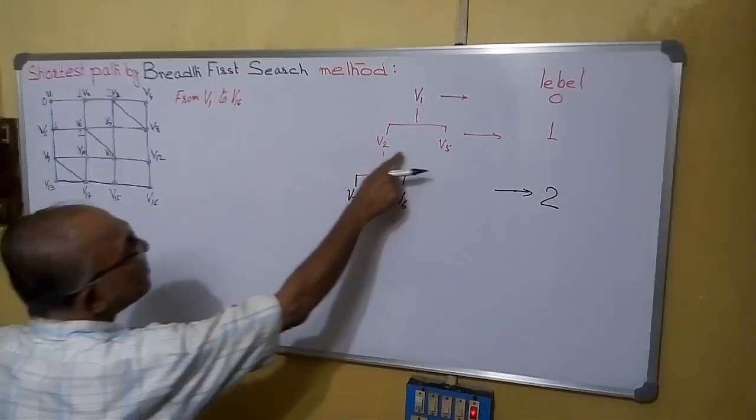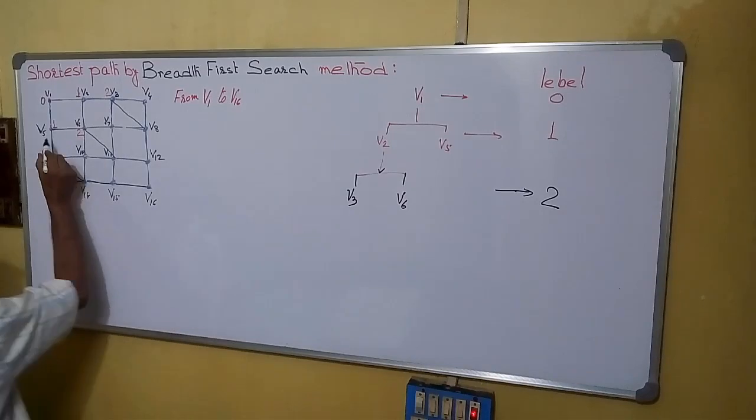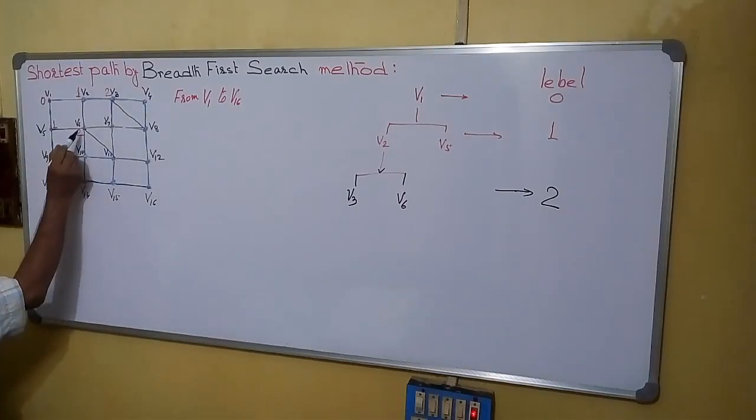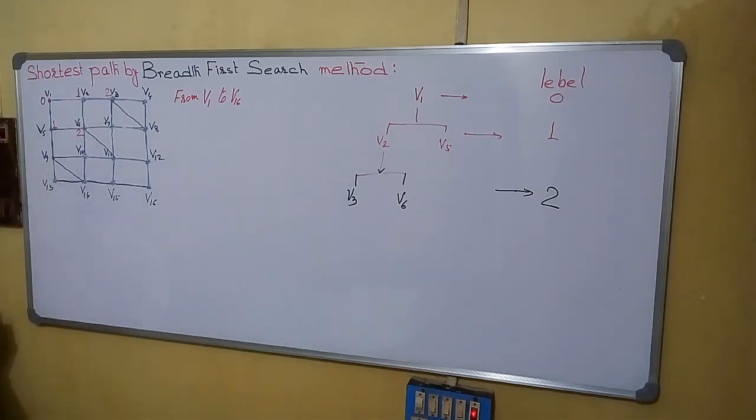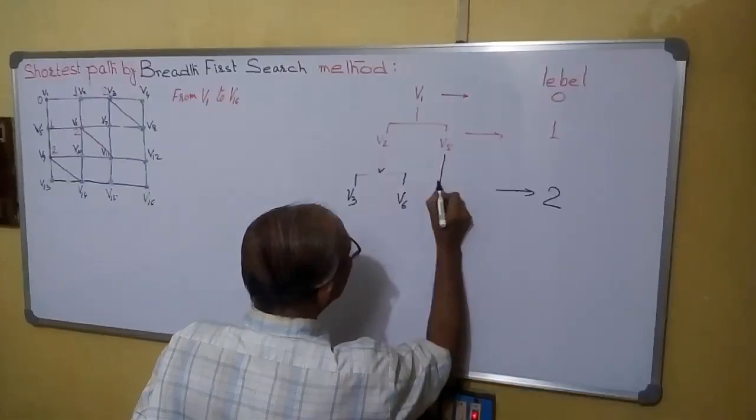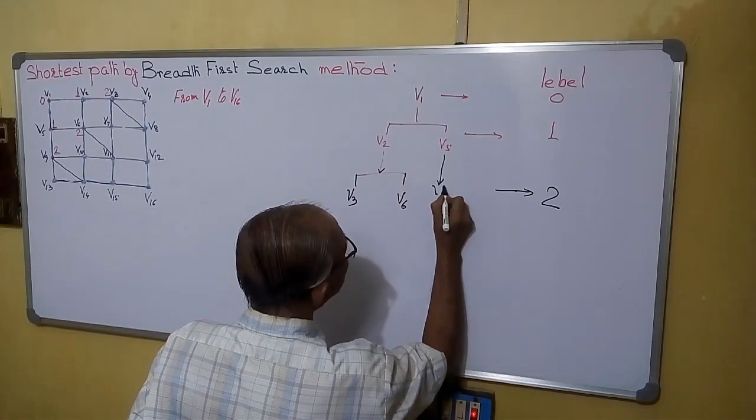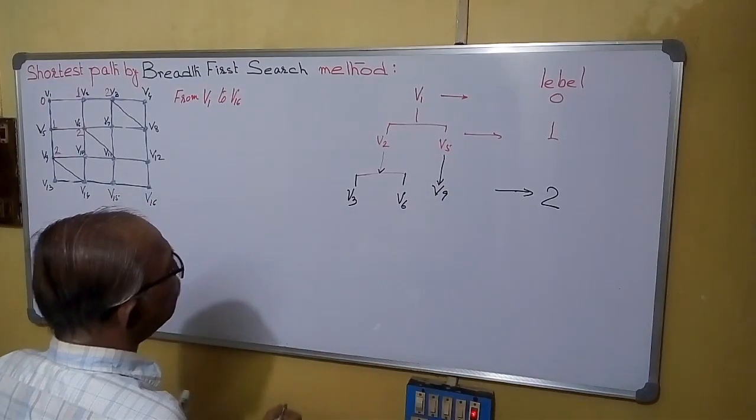Next adjacent vertex is V5. From V5 the adjacent vertex V6 is already leveled. We will not go to the vertex where it is already leveled. So next unleveled vertex is V9. So we will also mark it 2, 1 plus 1. So from V5 we are going to V9. This is also marked 2.